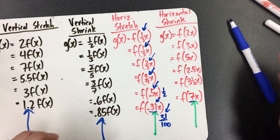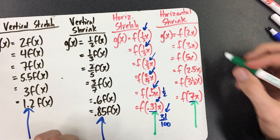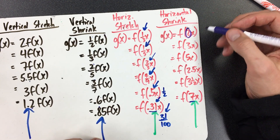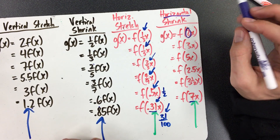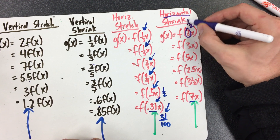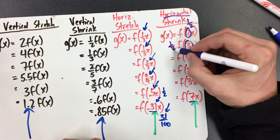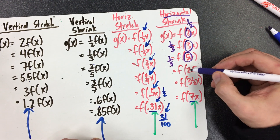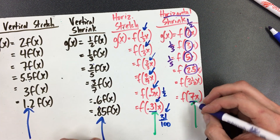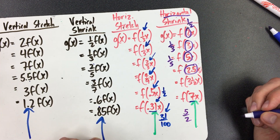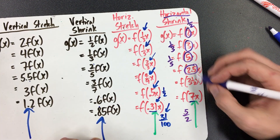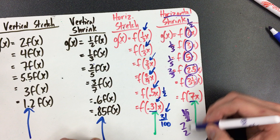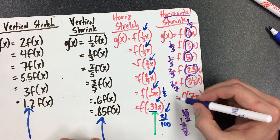For horizontal shrinks, these numbers bigger than 1 are going to fool you. But remember, when you're doing horizontal everything is backwards. The number is in the parentheses, it's bigger than 1, so it's a shrink — and you need the reciprocal for the factor. Horizontal shrink by a factor of 1/2, by a factor of 1/3 (reciprocal of 3), by a factor of 1/5, by a factor of 2/5 (reciprocal of 5/2), by a factor of 2/7 (since 3.5 is 7/2), and by a factor of 1/7.